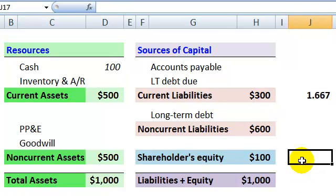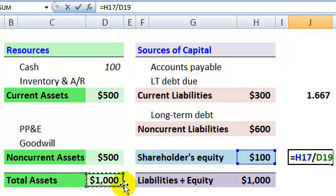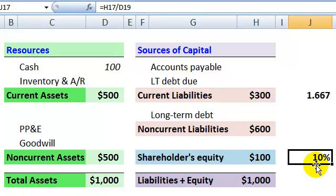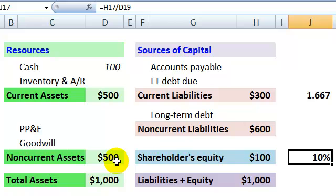Another example is dividing shareholders' equity into total assets, which gives us something like a tangible common equity ratio. At 10%, this gives us a measure of the company's equity buffer — its ability to absorb losses in the assets. Those are just two examples of the kind of ratio analysis we can perform. I hope this was a helpful introduction. This is David Harper of Bionic Turtle. Thank you.